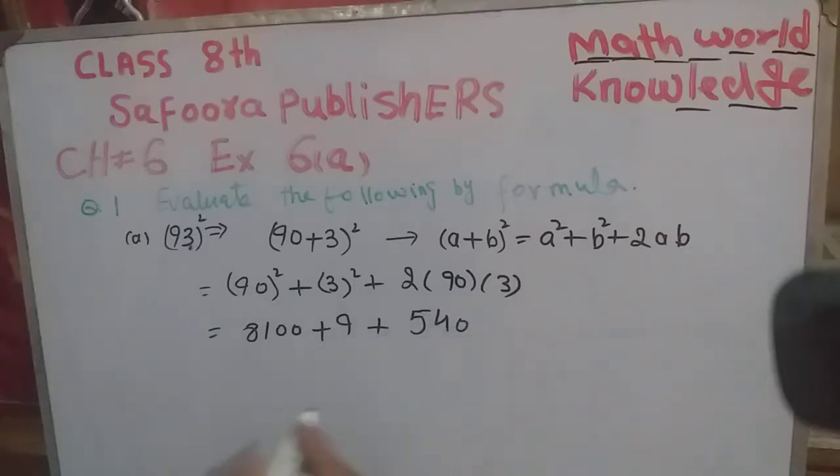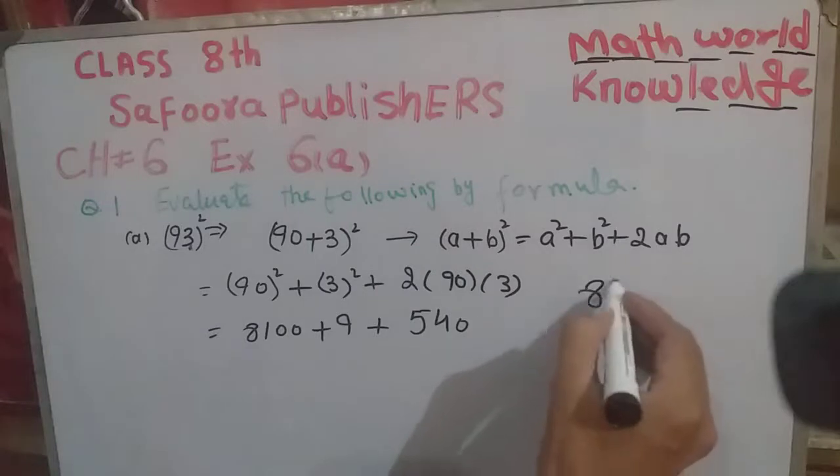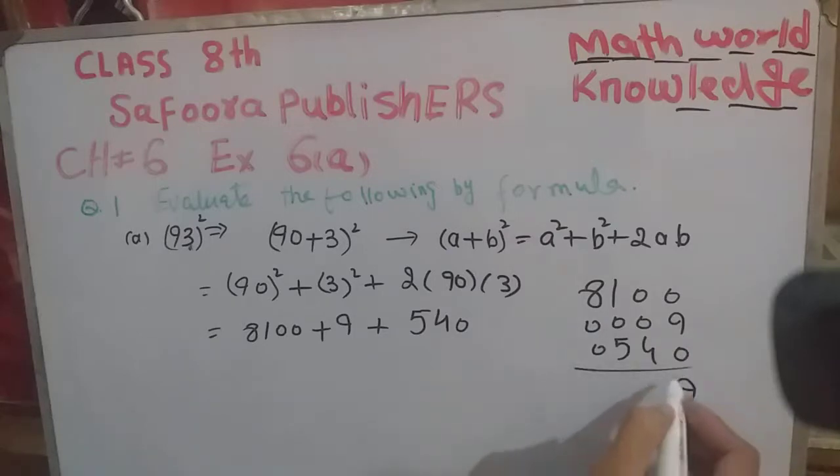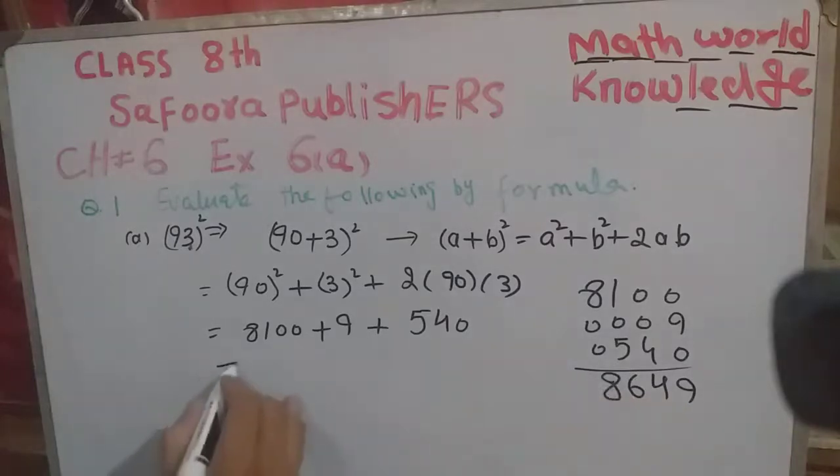Now we can add: 8100, 009, 0, 540. This one is the 9, this one is the 4, this one is the 6, and this one is the 8. So its answer is 8649.